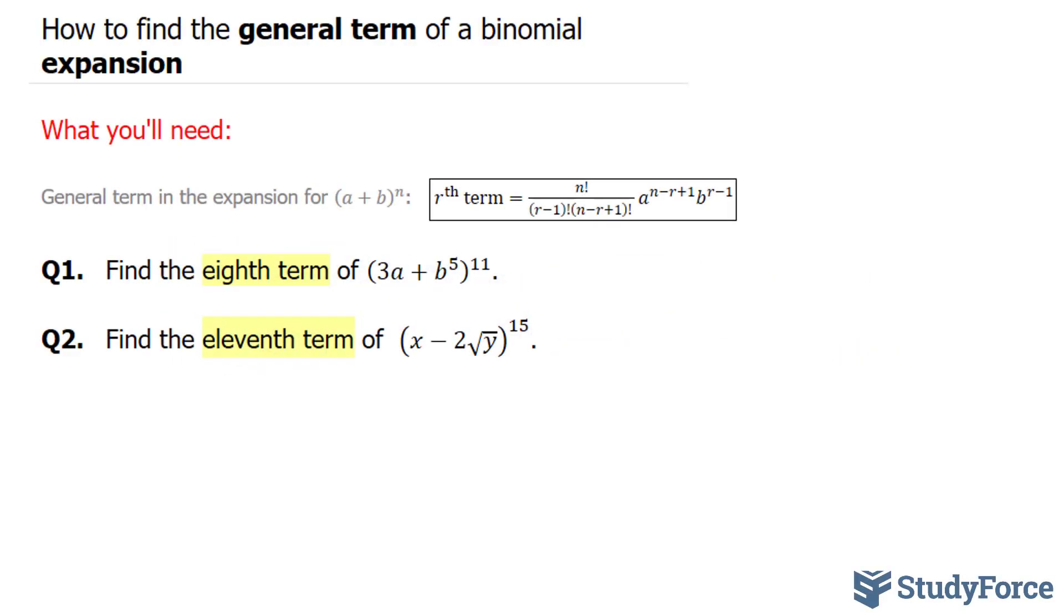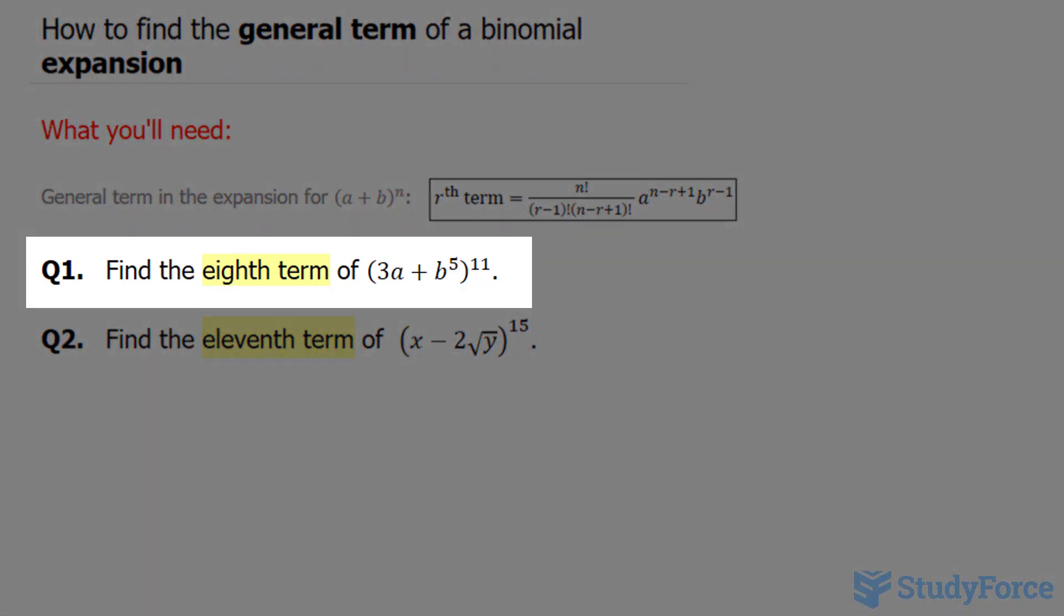In this video, I'll show you how to find the general term of a binomial expansion. Question 1 reads, find the eighth term of the expression 3a plus b to the power of 5 all raised to 11.